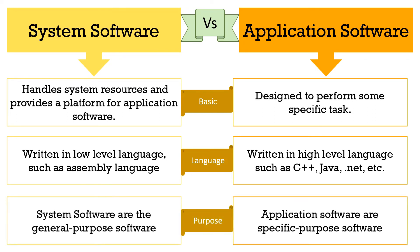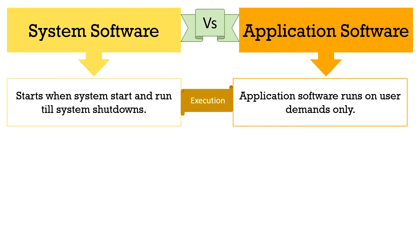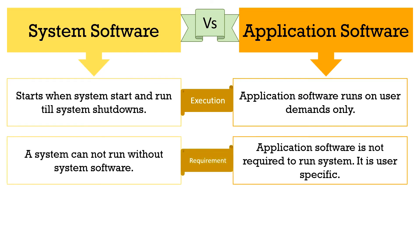The system software is a general purpose software, whereas the application software is a specific purpose software. The system software starts running as soon as you start your system and runs till the system is powered off. The application software starts when the user starts it and stops when the user stops it. A system cannot run without system software, whereas application software is user-specific — they are not required to run the system; they are meant only for users.